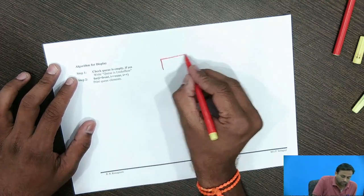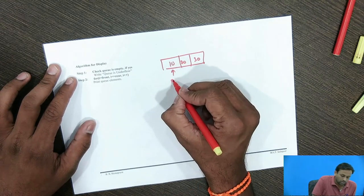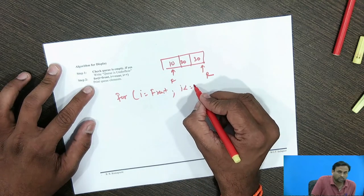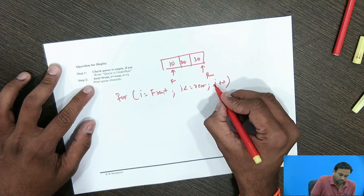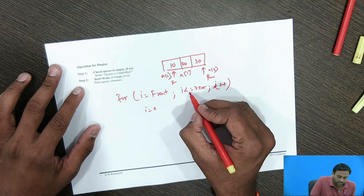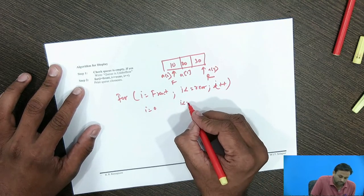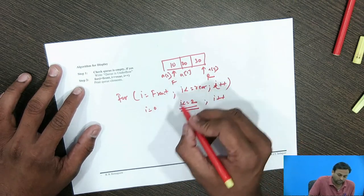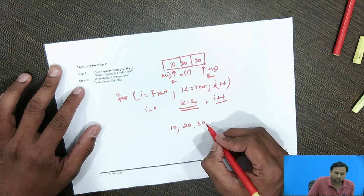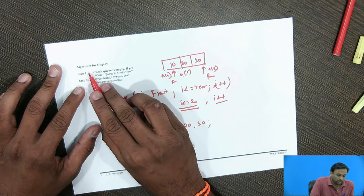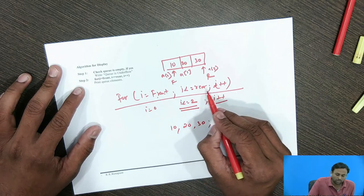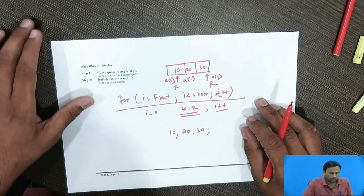For the display operation, suppose the user wants to display how many elements are in the queue. We write a for loop: for(i = front; i <= rear; i++). Starting at i = 0, the condition i <= rear (rear pointing to 2) is satisfied, so it prints 10, then increments to print 20, then 30. When the condition fails, we exit the loop. That is the algorithm for the display operation.